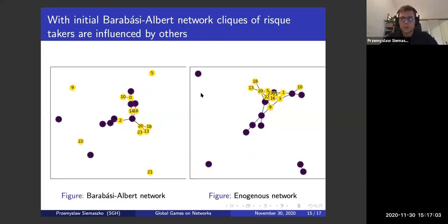With Barabasi-Albert network, we see something that is probably more resembling real life, where we have initially more or less spread out beliefs. And again, people that were from the very beginning likely to participate in the event are joining a big clique with others. However, some of them, like number two here, who is initially connected with multiple people who do not want to participate in the risky actions, can be convinced to do otherwise. But still, we have a rather big clique of people willing to take risky action.